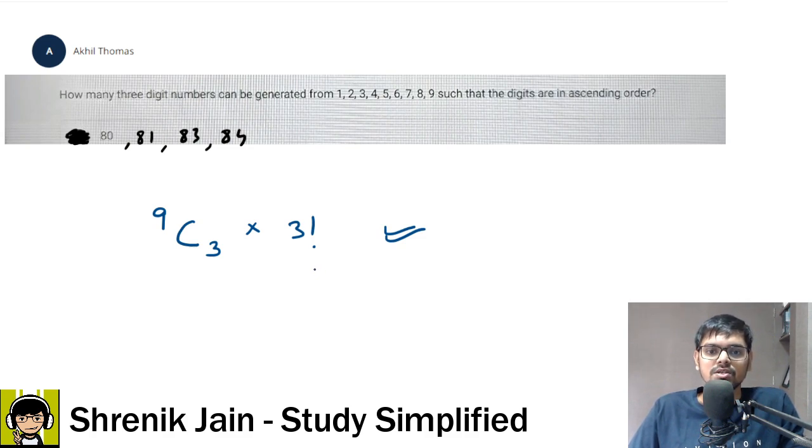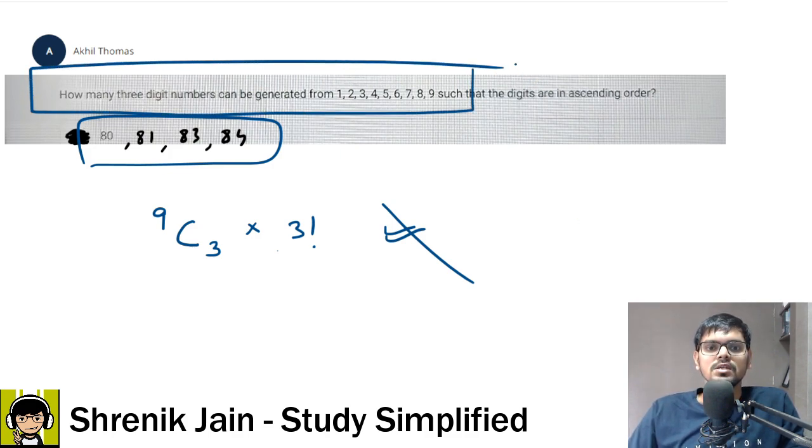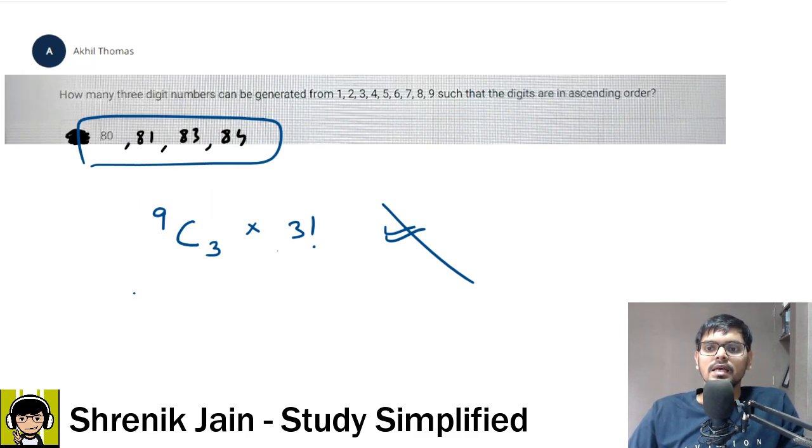Yes, but your answer is not matching. So I'm not getting 80, 81, 83, 84 kind of stuff. Very good. Because this is the wrong answer. Why is this wrong? If question was up till here, how many three digit numbers can be generated from the digits, then this is absolutely correct. But we have extension to this question such that the digits are in ascending order. So this is wrong answer.